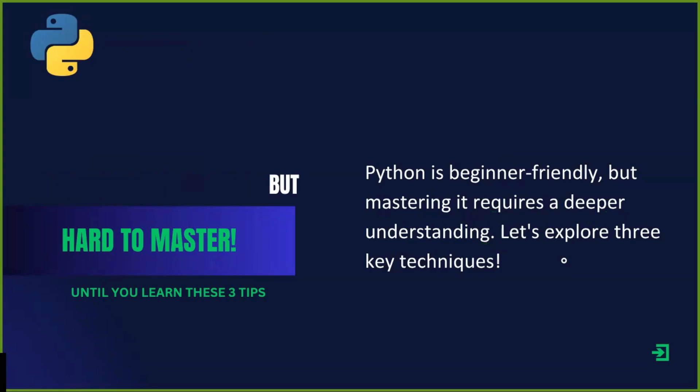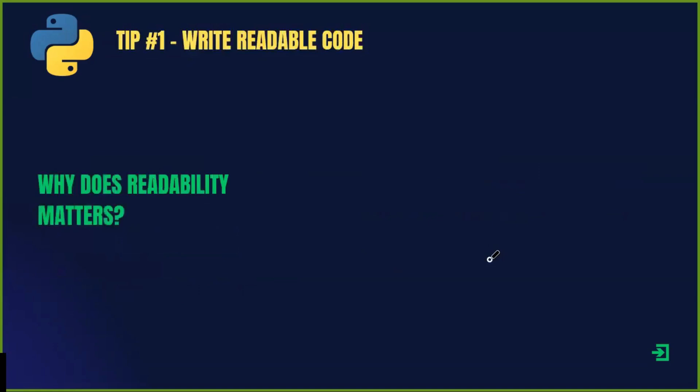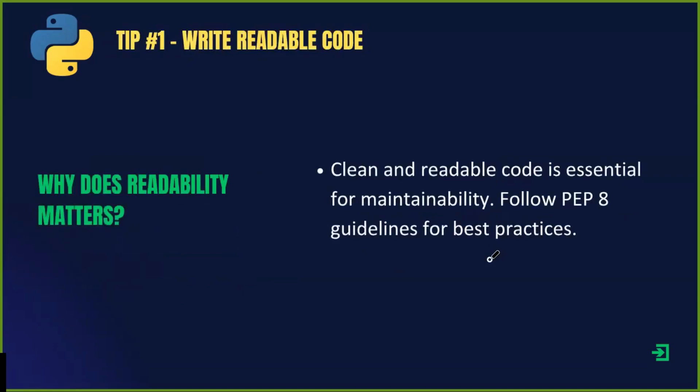Tip number one: write readable code. Writing code is not just about getting it to work. It's about making it easy to read and maintain. Readability ensures that both you and other developers can understand and modify your code in the future. Following Python's PEP8 style guidelines makes your code easier to read and maintain, which provides best practices for writing clean readable code.